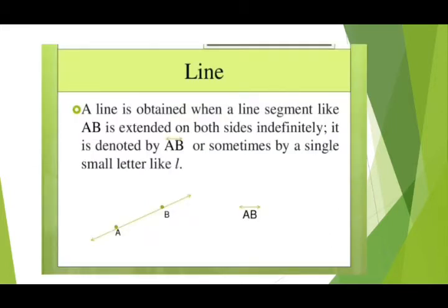A line is obtained when a line segment AB is extended on both sides to infinity. Line segment में limited length थी, लेकिन line में कोई limit नहीं होती। A line is denoted by AB or sometimes by a single small letter like 'l'.